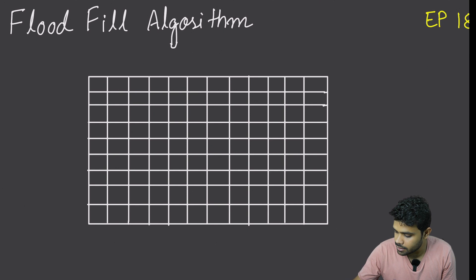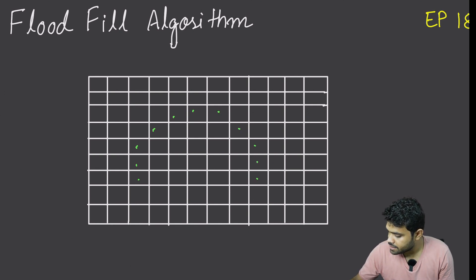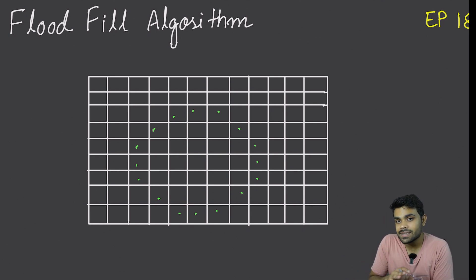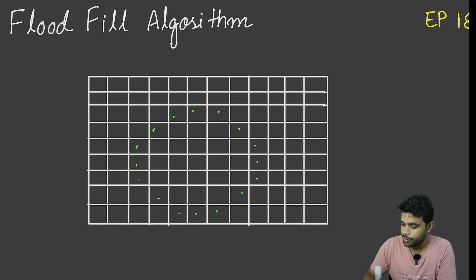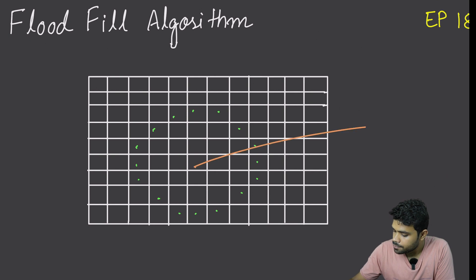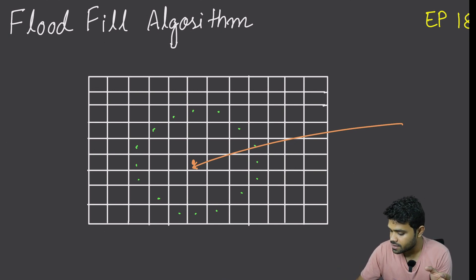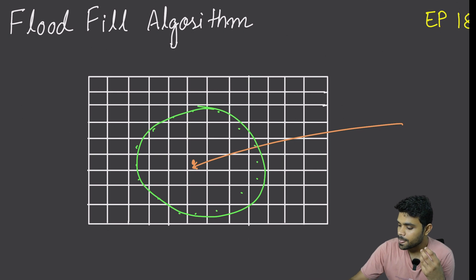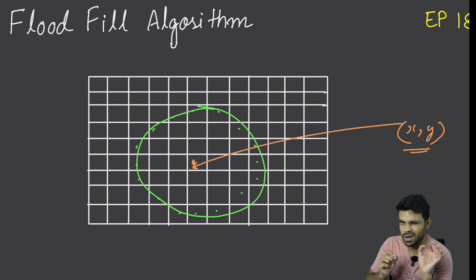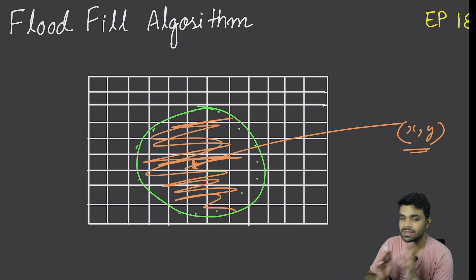Now I will draw that circle on the grid. Let's say this is the circle. Inside the circle, I want to color using any random color — let's say this peach color. What I will do is drop just a single drop of this color on any pixel, any cell within this green colored boundary. Let's call this coordinate X comma Y. I will drop one drop of this color and the entire region will be colored using this color.